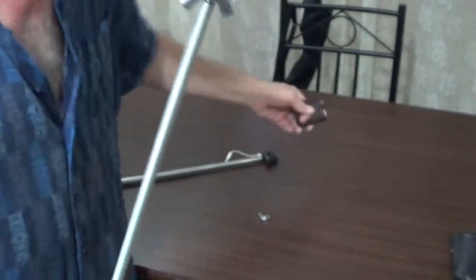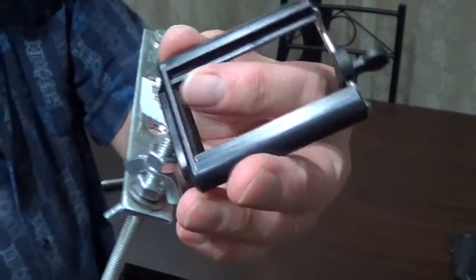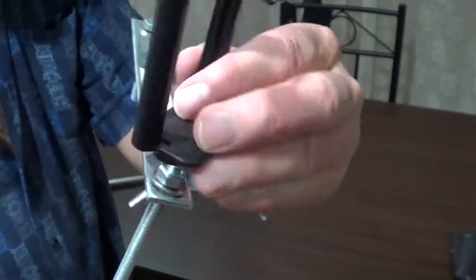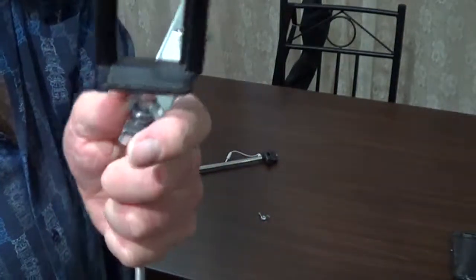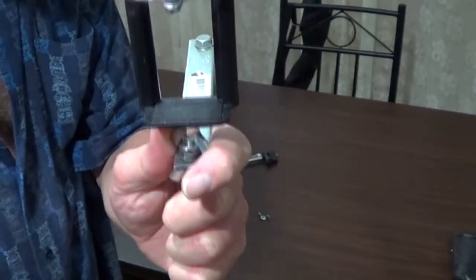So that we may attach the top, the cell phone holder part of the selfie stick. So just enough thread is showing, so that it doesn't poke through all the way here, because we don't want that. We don't want to poke through.